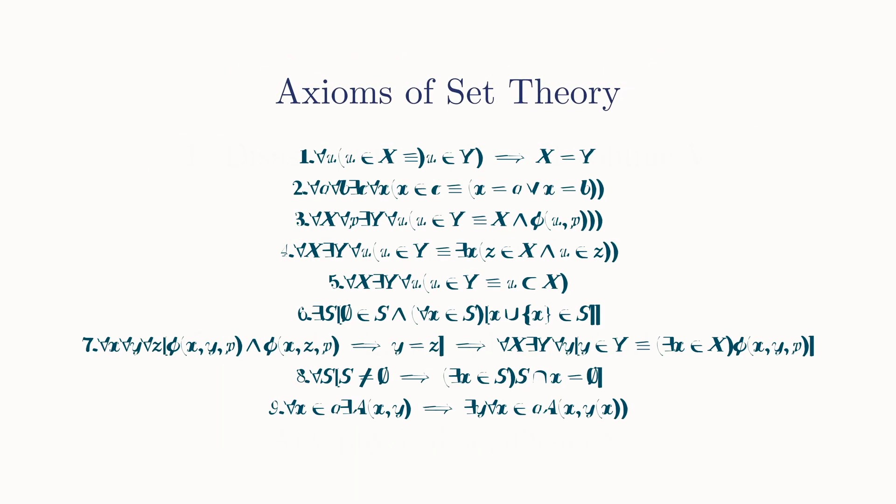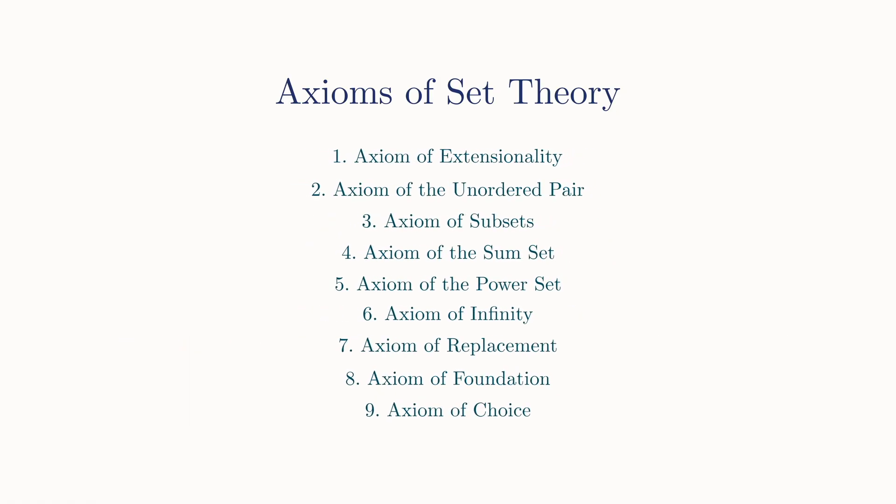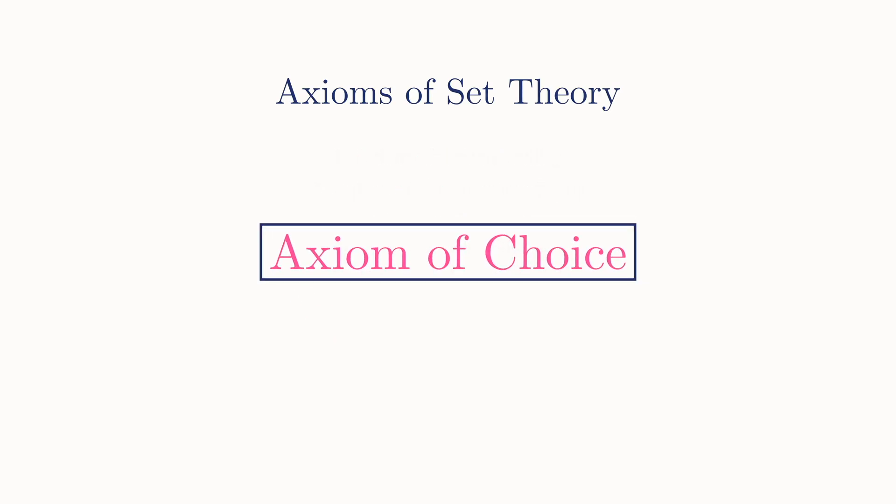The key assumptions behind the Banach-Tarski paradox are the Zermelo-Fraenkel choice axioms of set theory, or ZFC for short, with the axiom of choice playing an especially significant role. To get a full appreciation of this role, we'll have to consider some of the history of set theory.